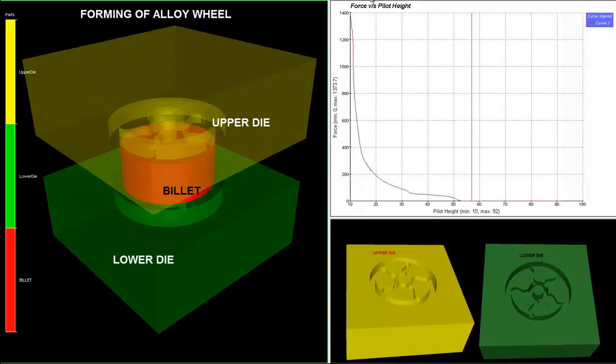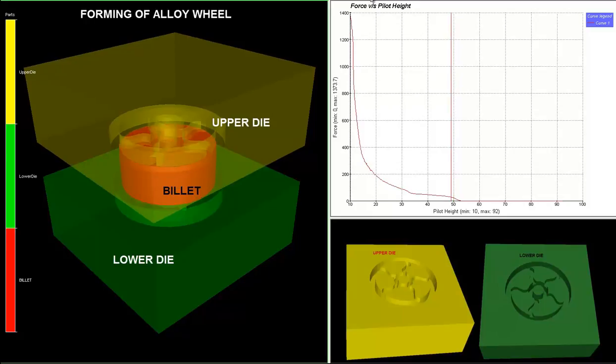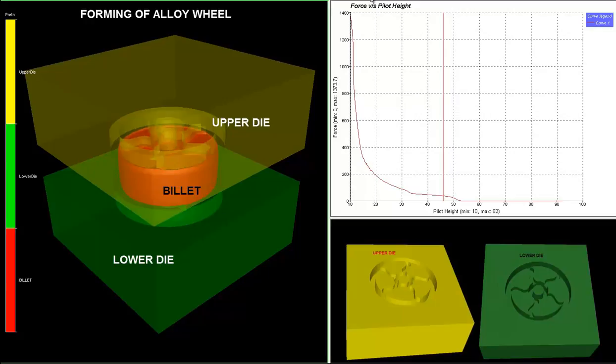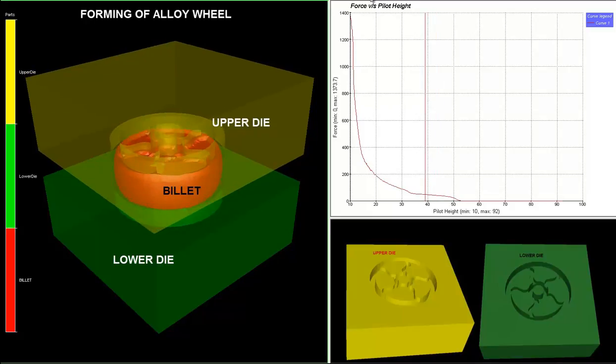Alloy wheel can be manufactured with a simple upsetting process using closed impression dies. The upper and lower half sections of the alloy wheel are impressed on the lower and upper dies respectively. On the left hand side, the simulation describes the process of forming of alloy wheel with upper die in yellow, lower die in green, and a cylindrical billet sandwiched in between.